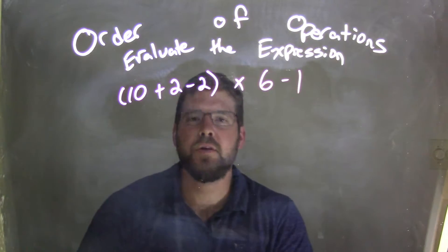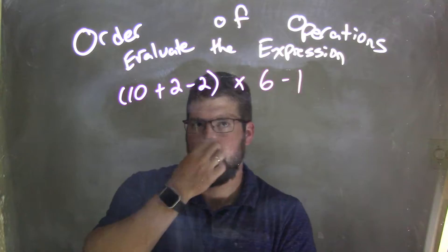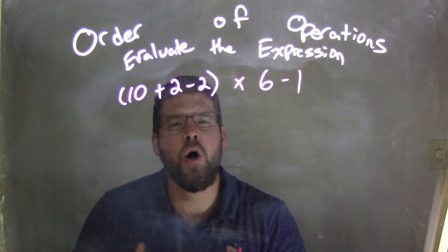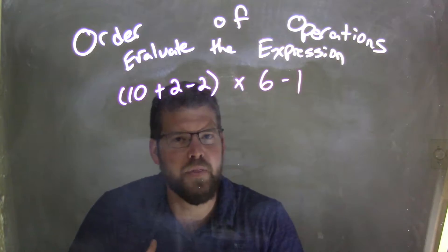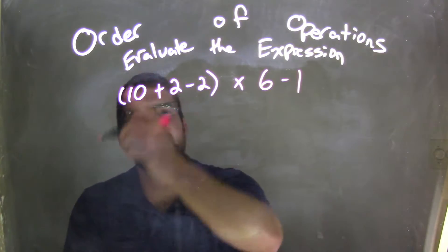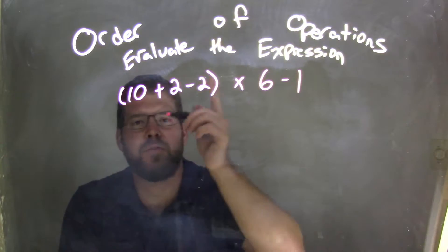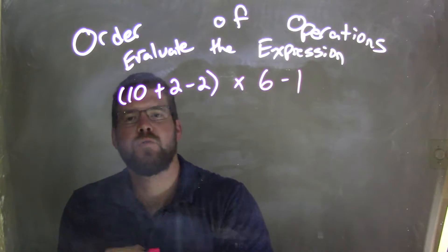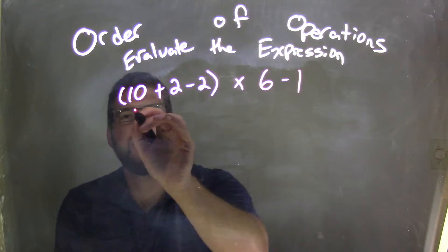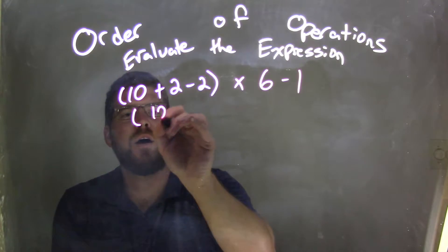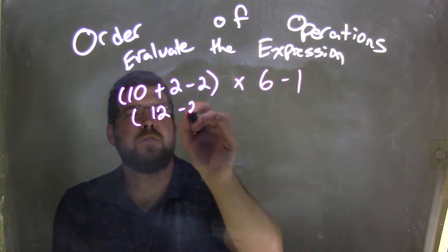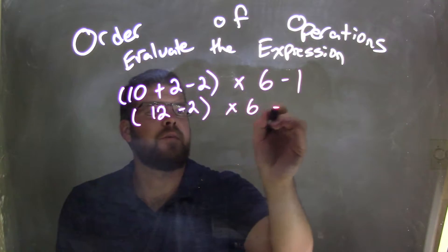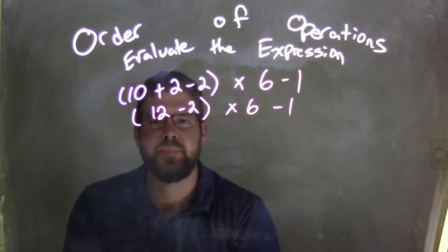So here's a tricky thing. We have 10 plus 2 minus 2 — all of that is in parentheses — so we want to deal with parentheses first, like always. Well, 10 plus 2 is 12. So now I have 12 minus 2 times 6 minus 1.